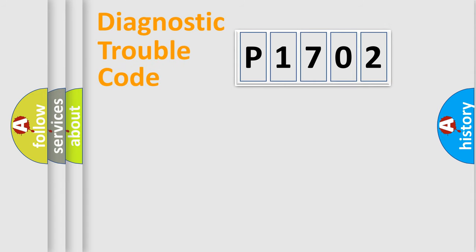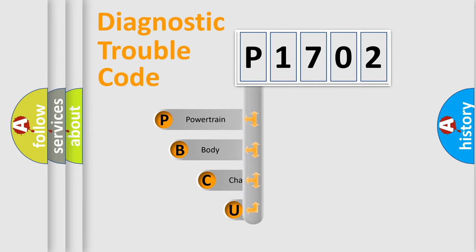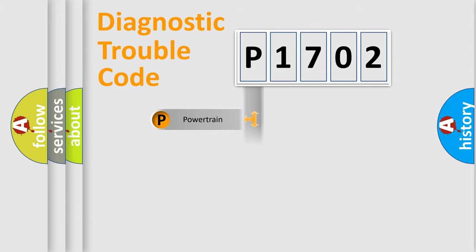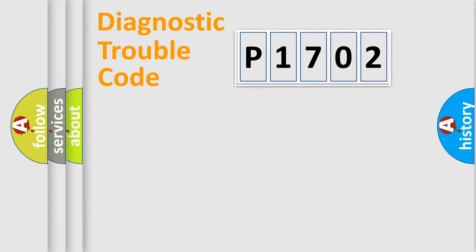Let's do this. First, let's look at the history of diagnostic fault code composition according to the OBD2 protocol, which is unified for all automakers since 2000. We divide the electric system of an automobile into four basic units: Powertrain, Body, Chassis, and Network.